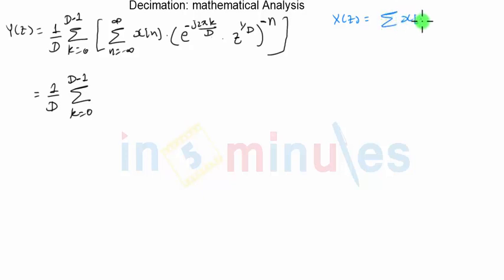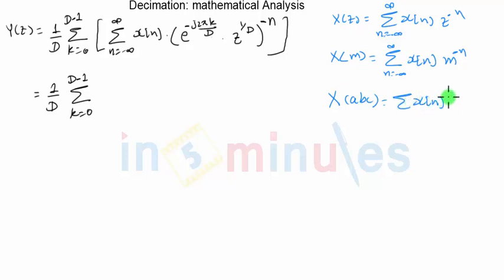What do you think would have been X of Z? X of Z would have been summation X of N into Z raised to minus N where N will vary from minus infinity to plus infinity. Suppose if I ask you the value of X of, let's say M instead of Z, if I write M then it will be summation X of N into M raised to minus N. Now suppose if I ask you the value of X of ABC, so in place of Z if I write ABC it will be summation X of N into ABC raised to minus N. So whatever comes as a base here of power minus N, when we had Z we write X of Z, when we had M we write X of M.